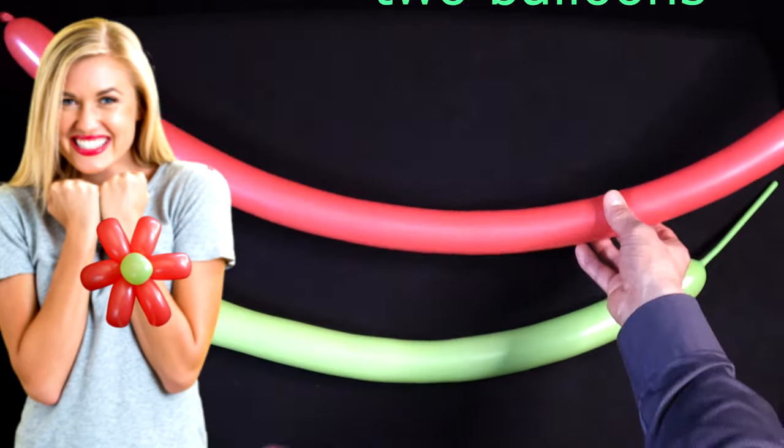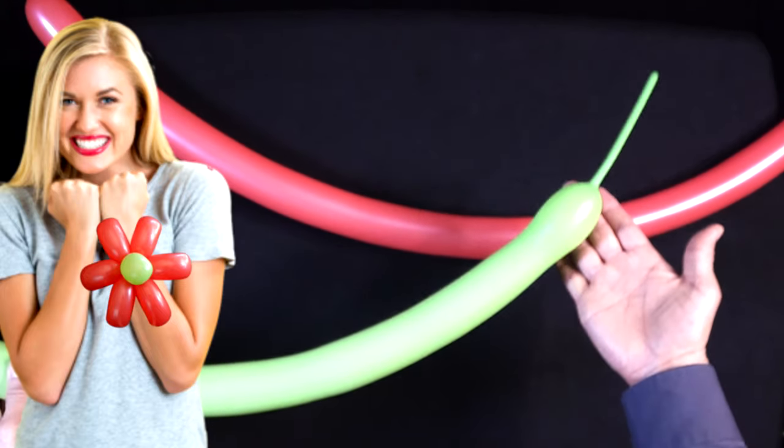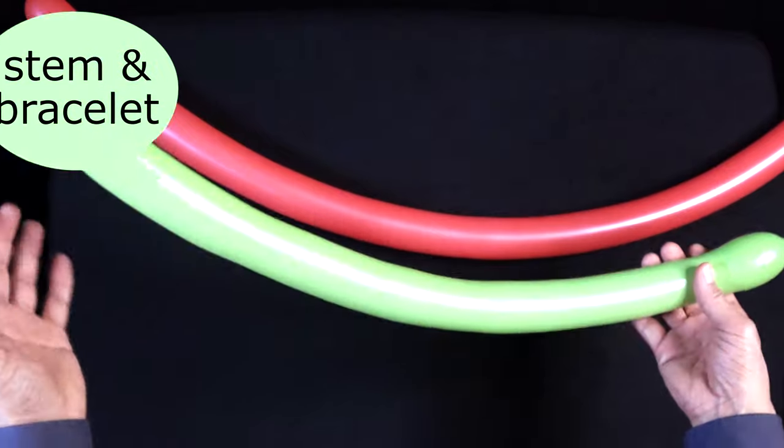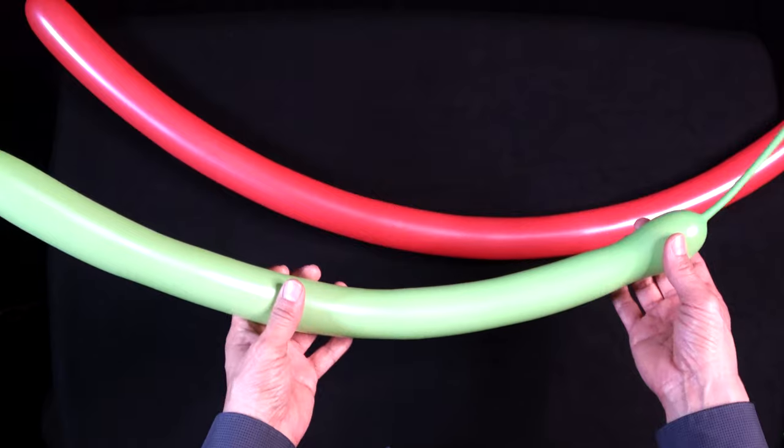You're going to need two balloons for your flower bracelet. First, you need a green balloon. It really isn't crucial how you inflate this one because you're only going to be using a very small portion, and the rest of the balloon forms the bracelet.